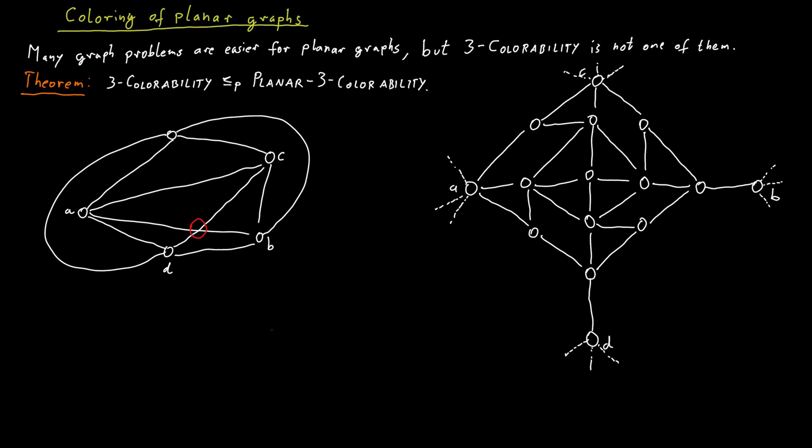Now, what I claim is that the new graph is 3-colourable if and only if the old graph was 3-colourable. And then we removed one of the crossings and we keep doing this for each crossing until no crossings are left and therefore we have a planar graph. And all the way through we didn't change whether the graph is 3-colourable or not.